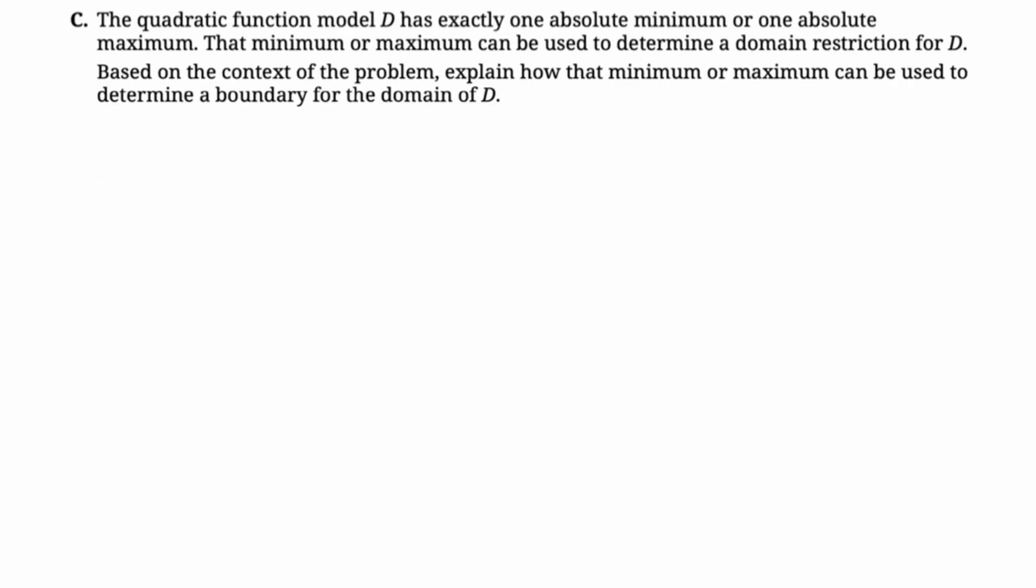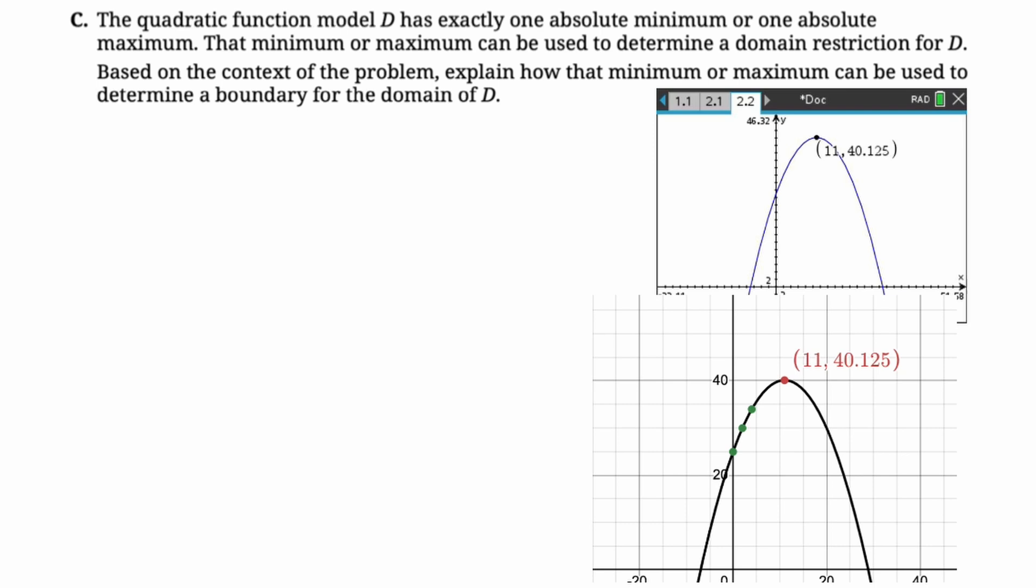Let's take a look at the next part. So the quadratic function model D has exactly one absolute min or one absolute max. We know it has an absolute max because it's a quadratic that opens down. The min or max can be used to determine a domain restriction for D. Based on the context of the problem, explain how that minimum or maximum can be used to determine a boundary for the domain of D. All right. So first thing I did was I just graphed this. You could graph it on either Desmos or on your calculator. It doesn't make a difference.